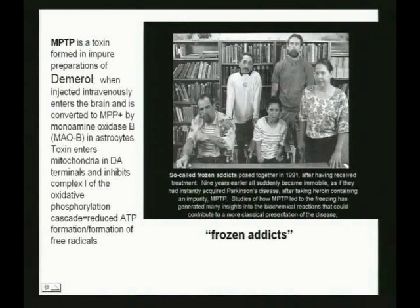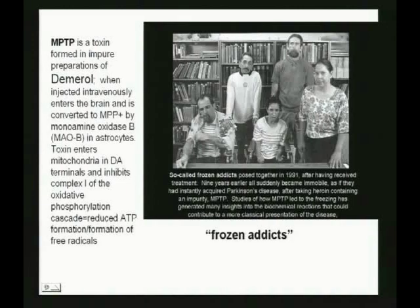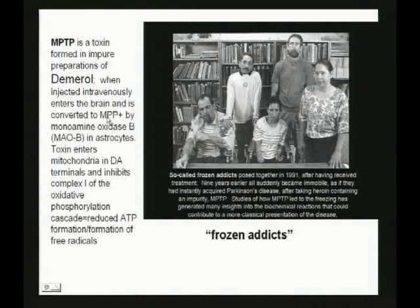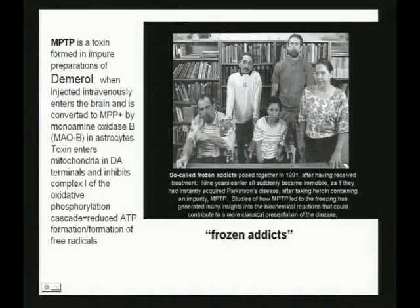The frozen addicts of San Francisco — they all look like they have Parkinson's. These people were trying to make Demerol in a basement chemistry lab. They got one carbon off in their synthesis, producing MPTP. When they injected it, it was a toxin that went right for the substantia nigra — converted to MPP+ by monoamine oxidase B — and they became frozen, Parkinson-like. MPTP is also a good animal model for finding solutions to Parkinson's. This is something you might see on national boards.